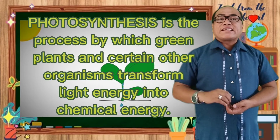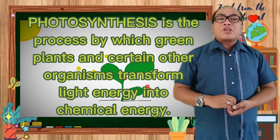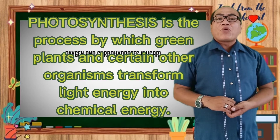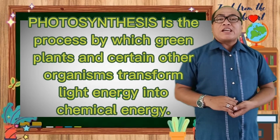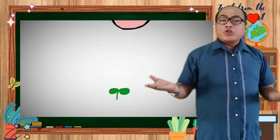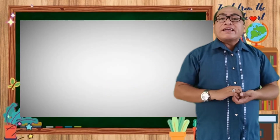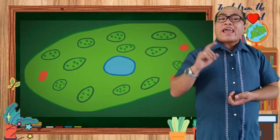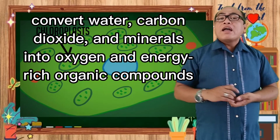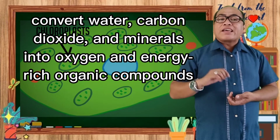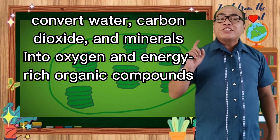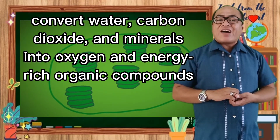Photosynthesis is the process by which green plants and certain organisms transform light energy into chemical energy. During photosynthesis in green plants, light energy is captured and used to convert water, carbon dioxide, and minerals into oxygen and energy-rich organic compounds.